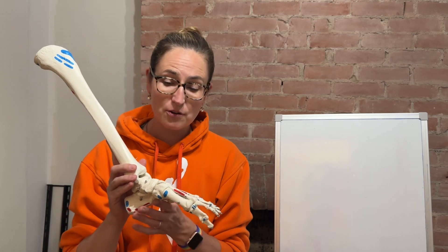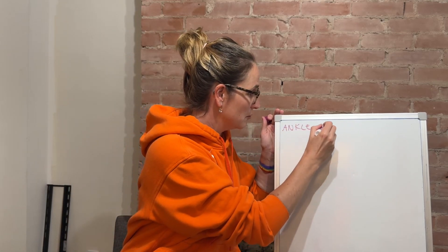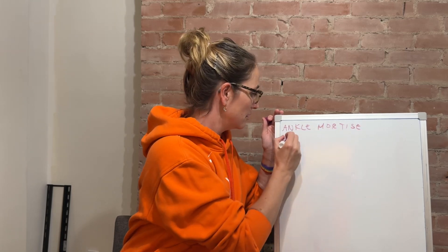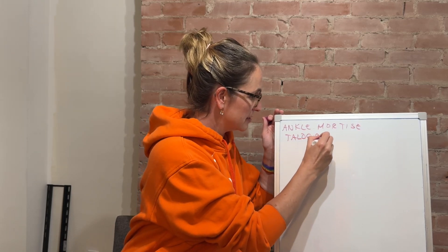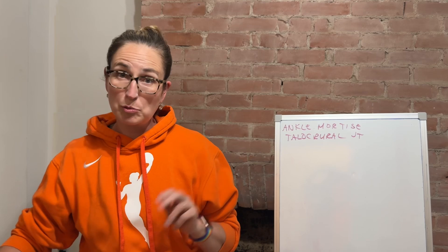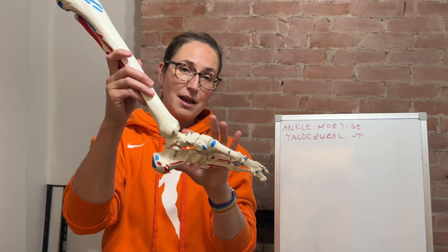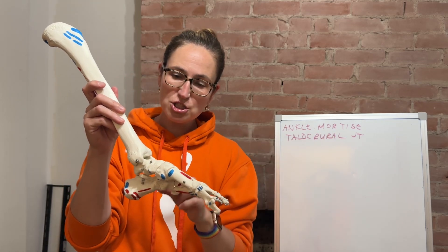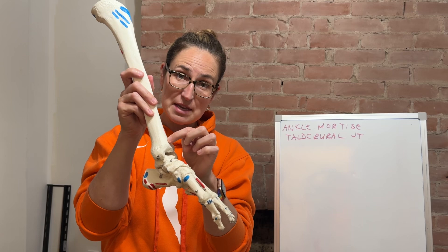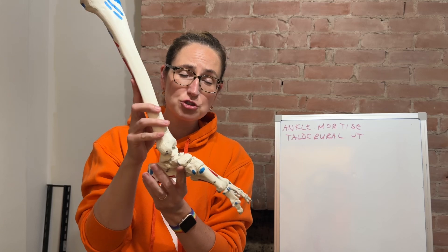The ankle joint is also referred to as the talocrural joint or the ankle mortise joint — sometimes one, sometimes the other, depending on which text you're reading. Talocrural makes reference to the two bones making contact: talo referring to the talus, and crura referring to the arch made up between the distal tibia and distal fibula. This is our true ankle joint.